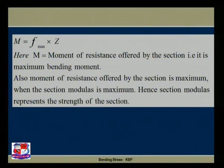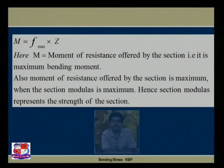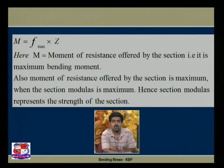The strength of a section is given by the equation M = f_max × Z, where M is the moment of resistance offered by the section, i.e., the maximum bending moment. The moment of resistance offered by the section is maximum when the section modulus is maximum; hence section modulus represents the strength of the section.